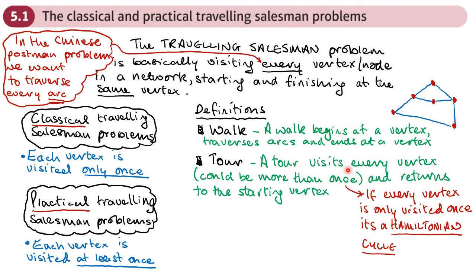Now, a tour visits every vertex, unlike a walk, and it could visit a vertex more than once and returns to the starting vertex. For example, a tour might start here, go along this edge, then these edges, visiting these vertices, and then this vertex. I visit this one again, this one again, and this one again, then return to the starting point. Think about if you go somewhere on a tour — you want to visit all the places, you might visit some places more than once, and you want to come back to where you started. If every vertex is only visited once, then it's a Hamiltonian cycle.